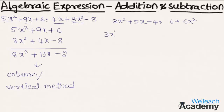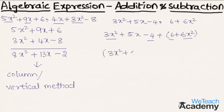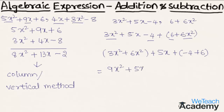By adding these two expressions we get 3x² plus 5x minus 4, plus 6 plus 6x². Now let us group the like terms and constant terms. This would come as 3x² plus 6x² plus 5x, plus of minus 4 plus 6. So 3x² plus 6x² is 9x², plus 5x, and minus 4 plus 6 is plus 2. So here we get the result as 9x² plus 5x plus 2.